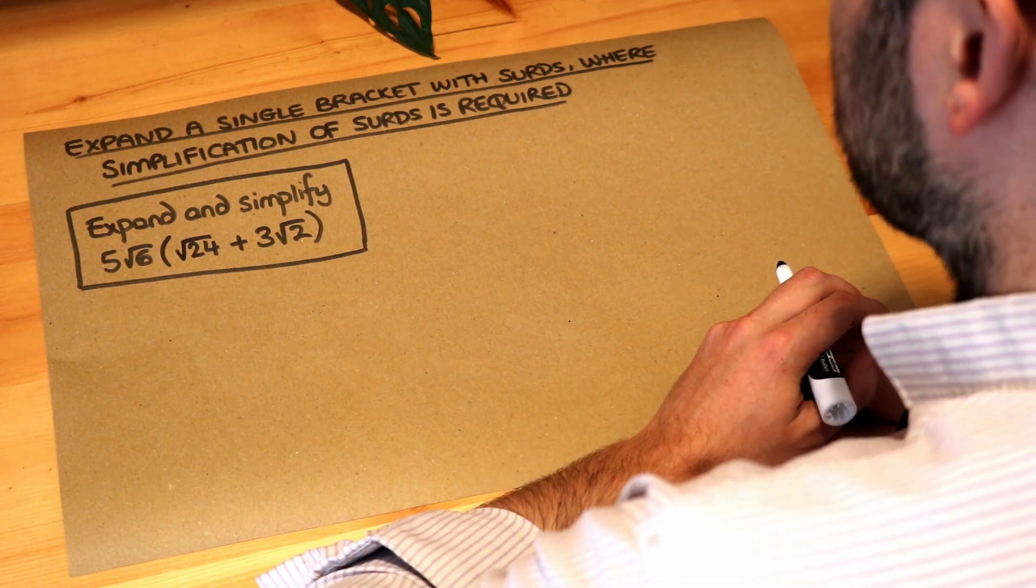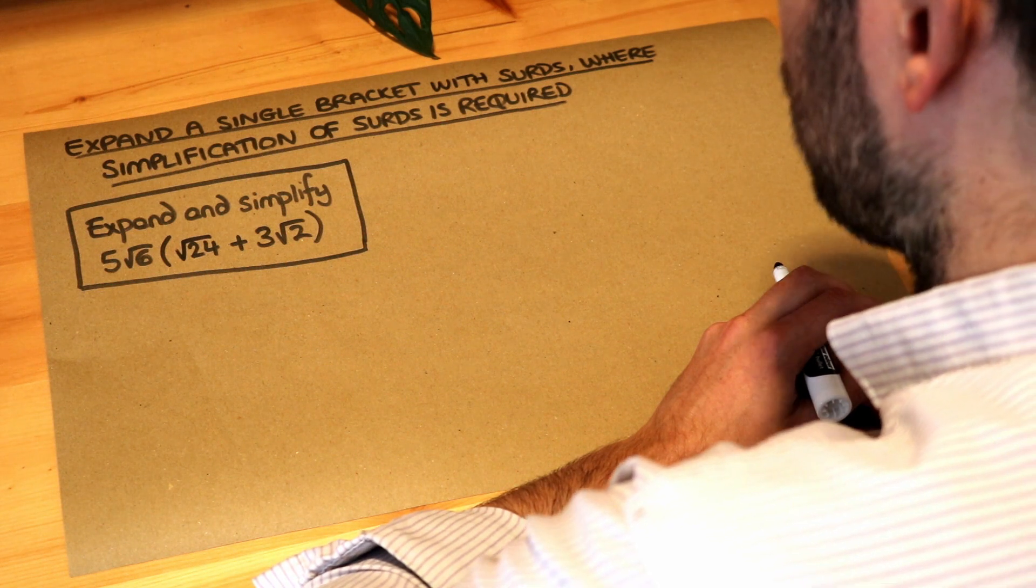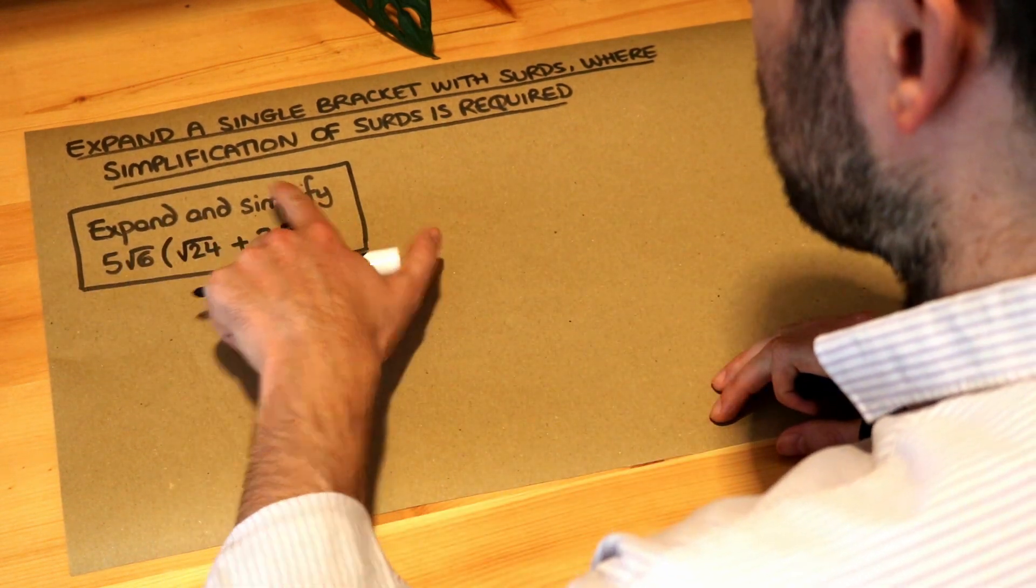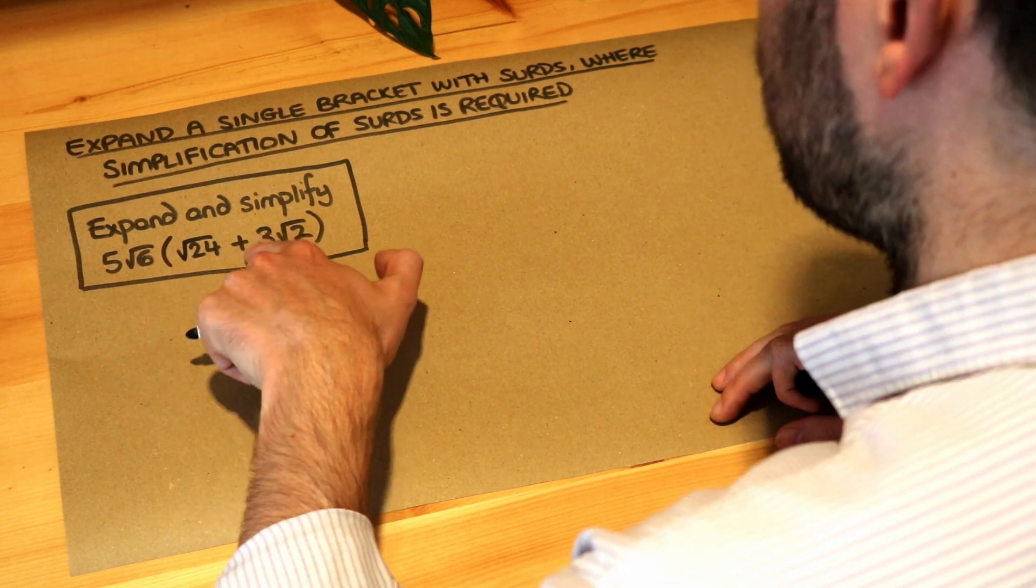Hello and welcome to this twos video on expanding a single bracket with surds where simplification of surds is required. We want to expand and simplify 5 root 6 multiplied by root 24 plus 3 root 2.